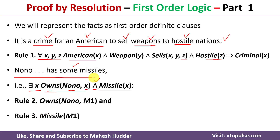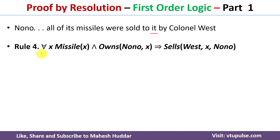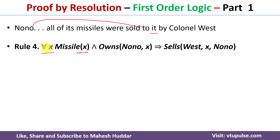The next statement is: all of Nono's missiles were sold to it by Colonel West. This means: for all x, if x is a missile and x is owned by Nono, then West sold x to Nono. In FOL: ∀x Missile(x) ∧ Owns(Nono, x) → Sells(West, x, Nono).